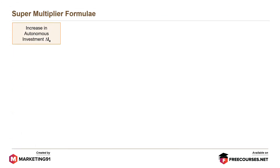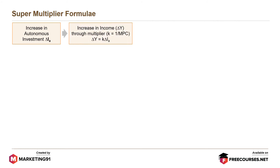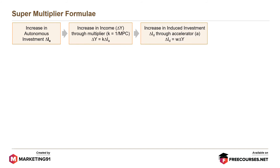An increase in autonomous investment, Delta Ia, leads to an increase in income through the multiplier, that is, Delta Y equals K into Delta Ia, which further leads to an increase in induced investment through accelerator W, where Delta Id equals W into Delta Y. This finally results in an increase in income and aggregate demand by a larger amount.